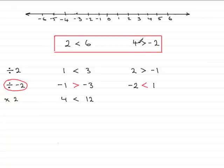Is this going to be the case with this example here? Times both sides by 2, 4 2's are 8, and minus 2 times 2 is minus 4. 8 when compared with minus 4, 8 is greater than minus 4. So no problem there. No change in the sign.